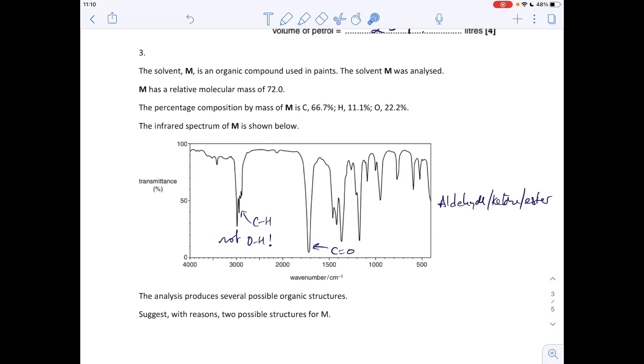Question number three, similar to question one. This time we've got slightly different data. We've got the infrared spectrum, we don't have a mass spectrum, we're just told that the relative molecular mass is 72. We're also given the percentage composition by mass, so we're obviously going to have to do some kind of empirical formula calculation with that information. And then we've got to analyze all that information and come up with two possible structures for M.